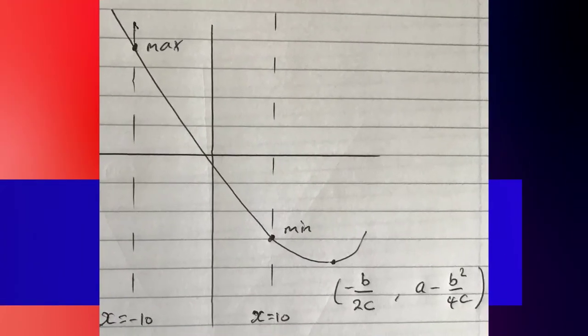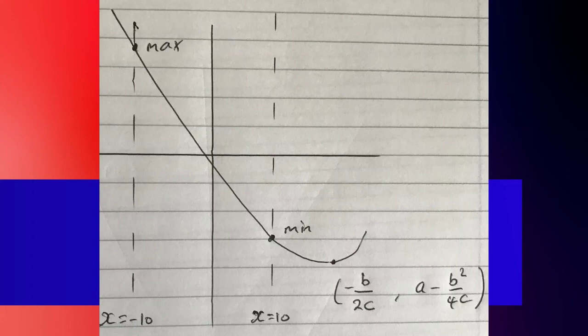The final case: if the turning point is beyond x equals 10, which can happen if b is very negative, then the minimum occurs at x equals 10, giving 100c plus 10b plus a, and the maximum occurs at x equals minus 10, giving 100c minus 10b plus a. All that remains is to write down each of those four cases clearly as a conclusion and you are done. Thank you.